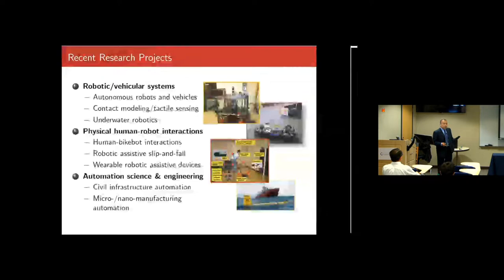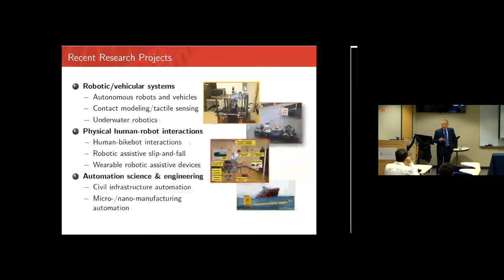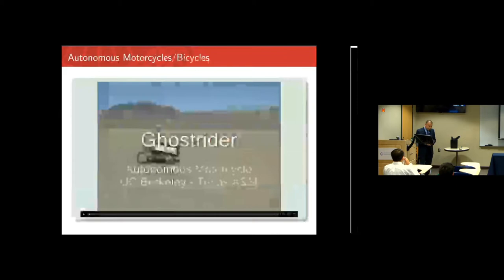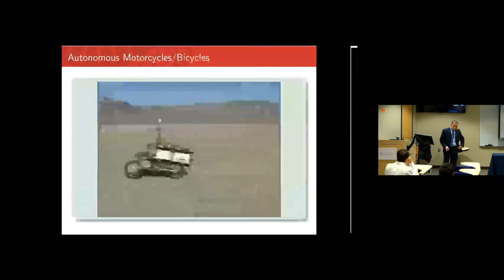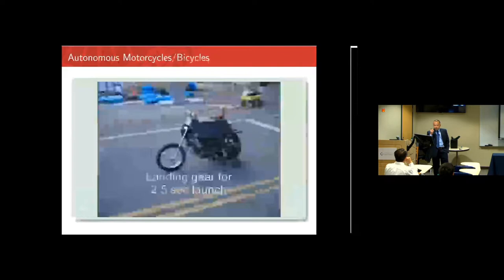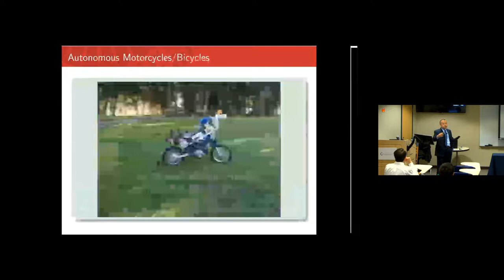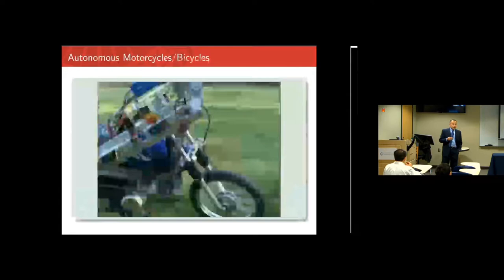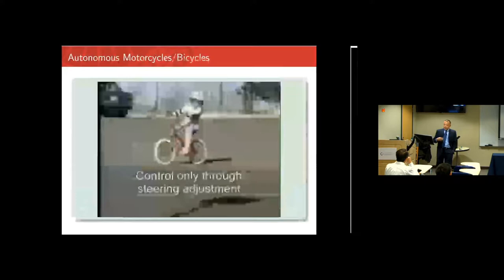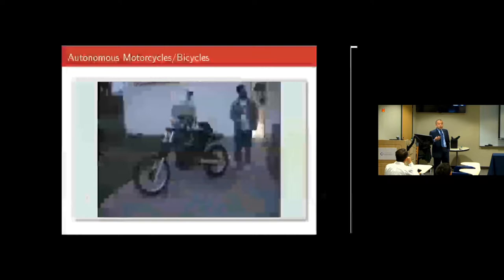Today I cannot cover all these topics. Xu suggested anything interesting to engineering students would be good, so I picked the human-bike interactions. I got interested in this topic back in 2005, when I was a research faculty member at Texas A&M, where we developed an autonomous bicycle for the DARPA Grand Challenge. The DARPA Grand Challenge started in 2004-2005 in Southern California. We came up with the bicycle and motorcycle as a platform for autonomous driving competition, because as a single-track vehicle, it's very agile and can go through very narrow terrain.